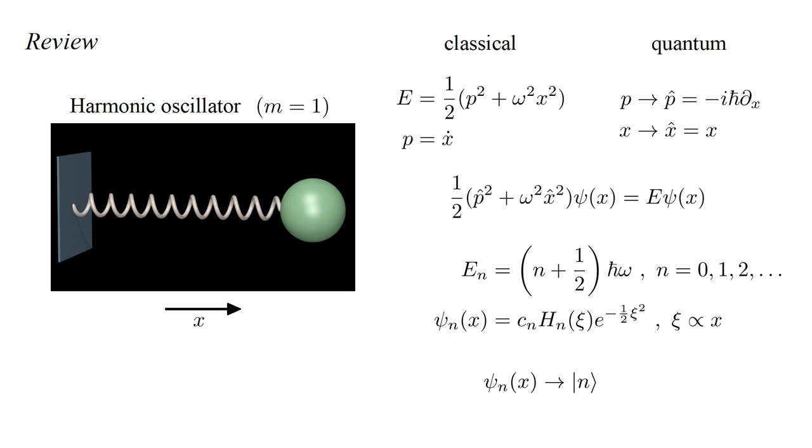For simplicity, we use Dirac notation, and represent the n-th wave function by a ket containing the letter n, representing the state with n energy quanta. As is generally true for Hamiltonian operators, these so-called orthonormal eigenfunctions have the property that the projection of a wave function onto itself is one, while the projection of one wave function onto another is zero.